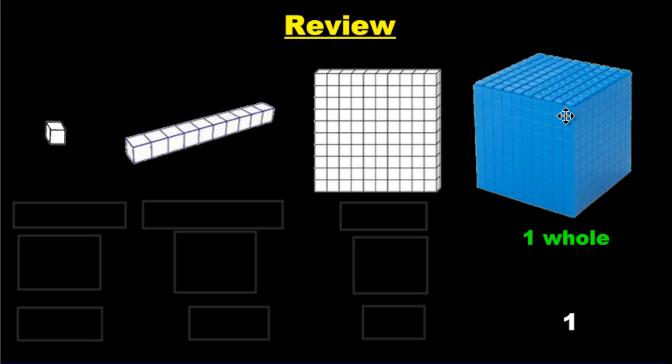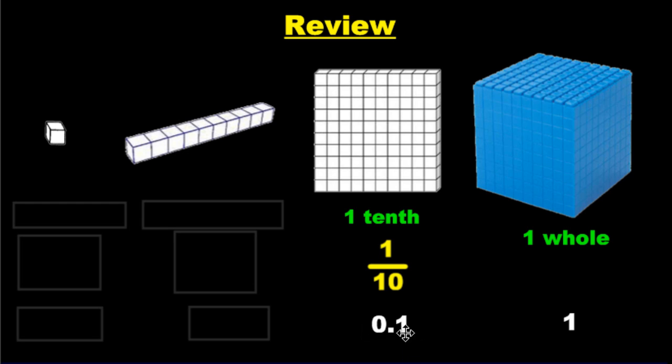Now stop for a second and think about it. We've got these flats stacked on top of each other from top to bottom. We've got ten stacks, which means one of them is one part out of ten, or one tenth. As a fraction, it's 1/10, and as a decimal, 0.1, because if you remember back to Grade 6, you learned that the first spot after the decimal is called the tenth spot.